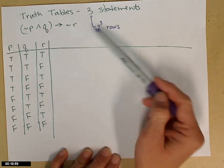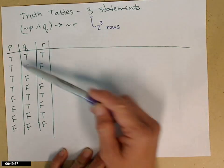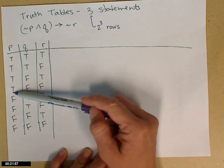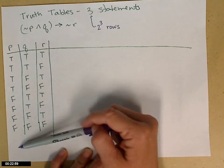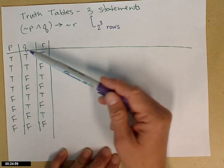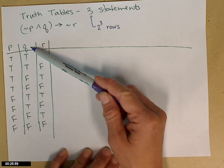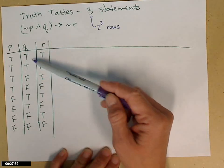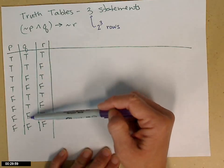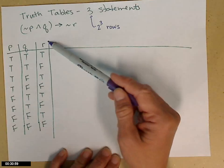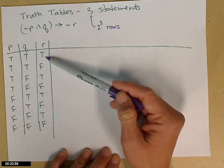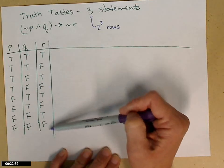For P, since I have eight rows, the first half — first four — are true, and the last four are false. For Q, I alternate: two true, two false, two true, two false. And then R alternates every other.